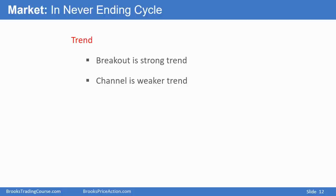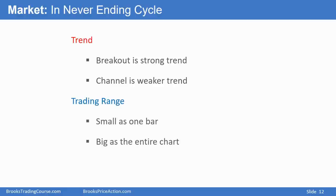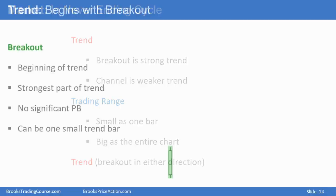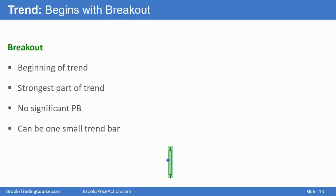I want to talk some about trends. Trends are either breakouts or channels — a breakout is a strong trend and a channel is a weaker trend. A trading range can be as short as one bar or as big as the entire chart. And as I said, if a trading range is brief, I call it a pullback because I'm assuming the trend that came before it will resume. Once a trading range reaches 20 bars or more, the probability of a bull breakout is about the same as for a bear breakout. So the market cycle is: it trends, enters a trading range, the trading range breaks out in either direction, you get another trend, and the process just continues to repeat. All trends begin with a breakout — it can be a single bar or a series of bars. Every bull trend bar is a breakout; it's also a climax.